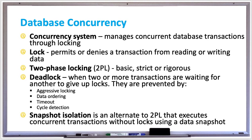The concurrency system manages concurrent transactions in a database by implementing isolation levels and trying to maintain good database performance. However, there's a trade-off between isolation levels and performance, so locking is a technique used to handle this.